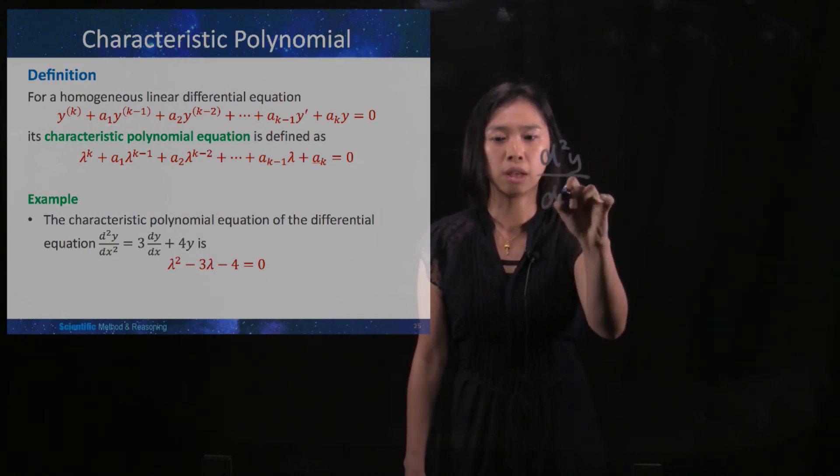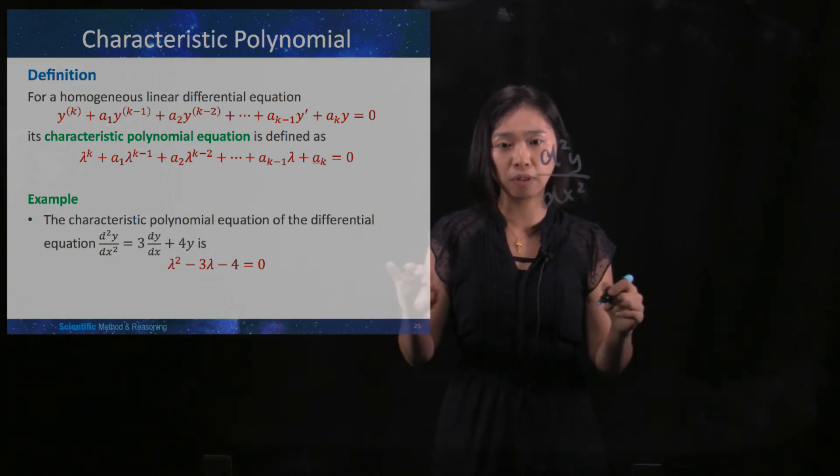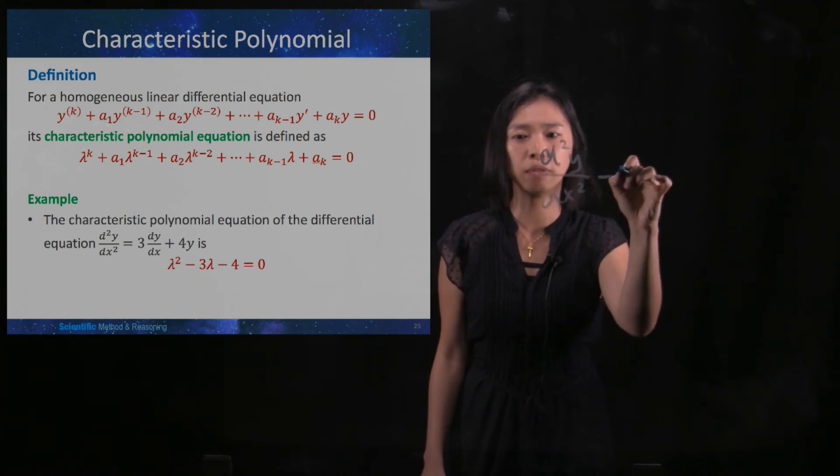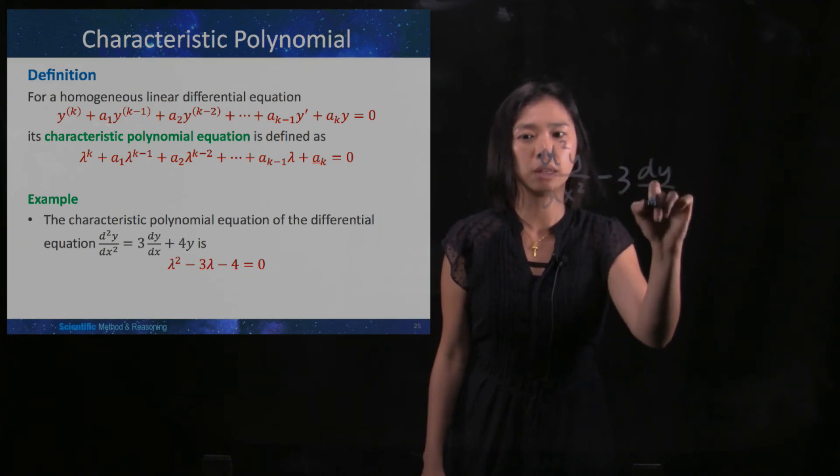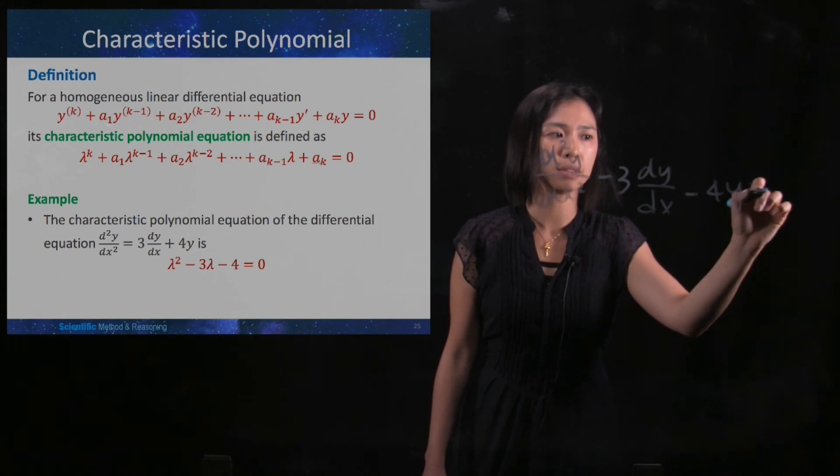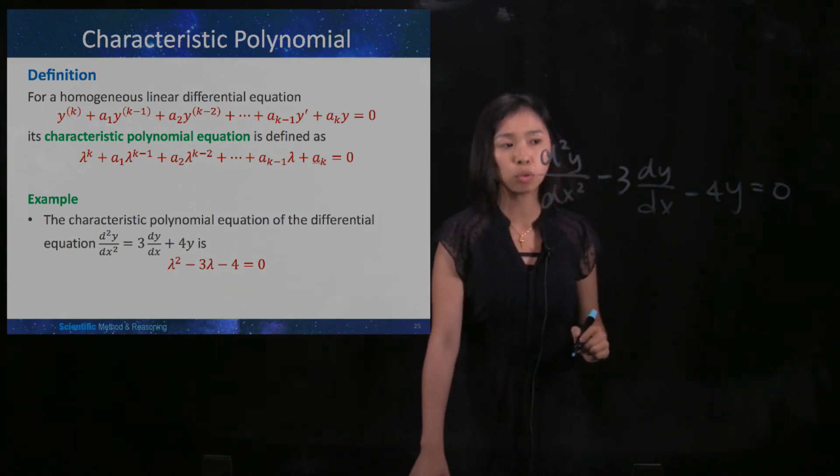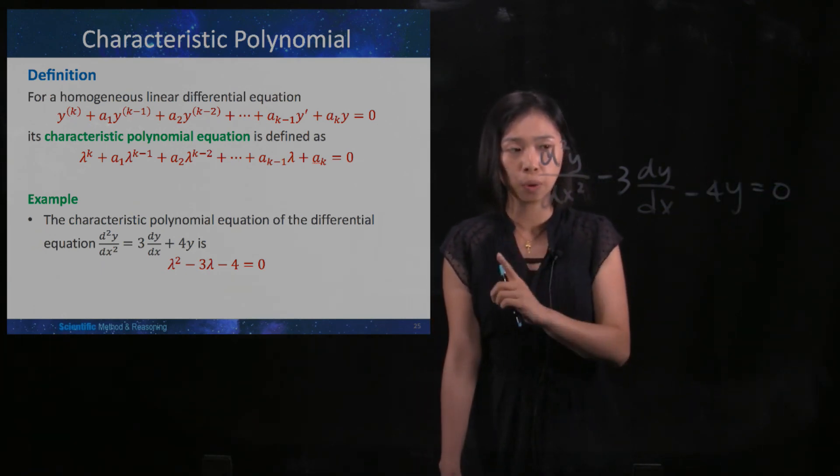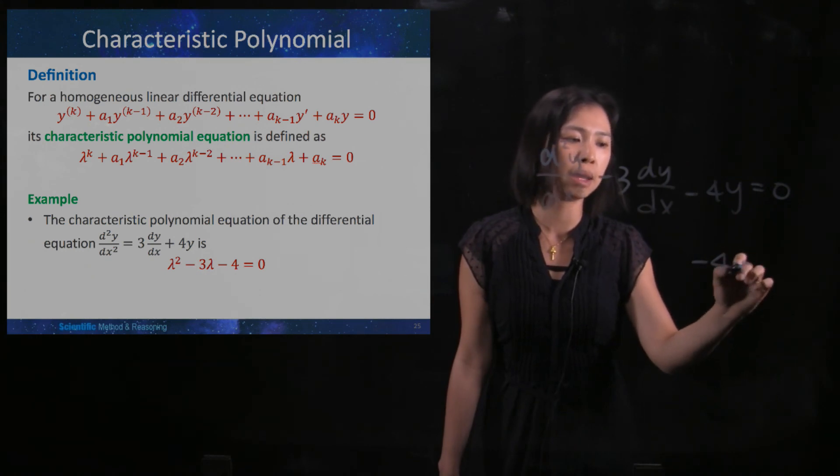You'll have d squared y dx squared, and then I move every term to the left hand side, so you will have three dy dx minus four y equals zero. So what I try to do is, I change the y into one, so here you become a minus four.